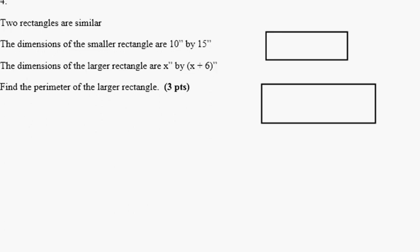Here we're given two rectangles are similar. We've only been dealing with triangles so far, but in reality, any figures can be similar. All that similar figures mean is that it's the same shape and that the proportions, the ratios between the corresponding sides, are the same.